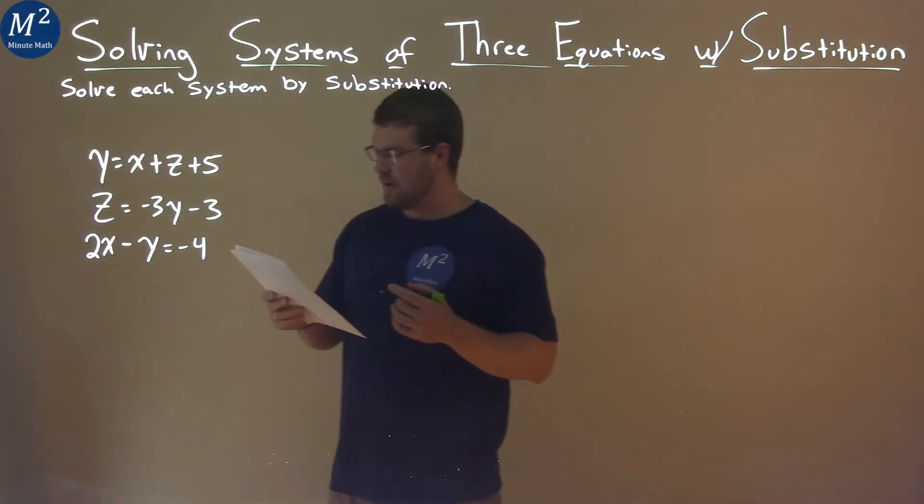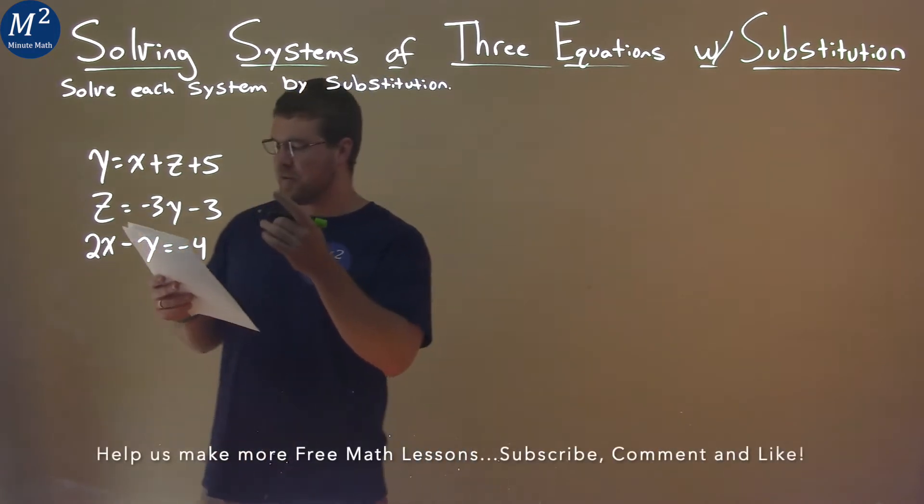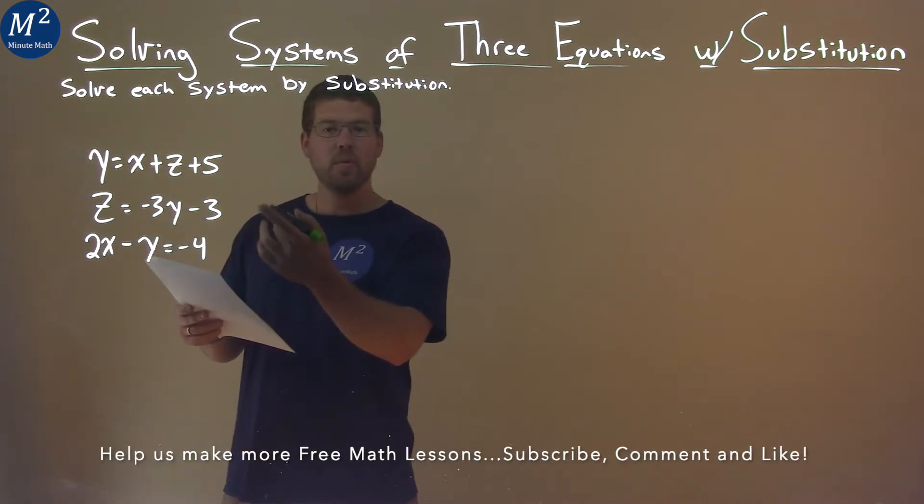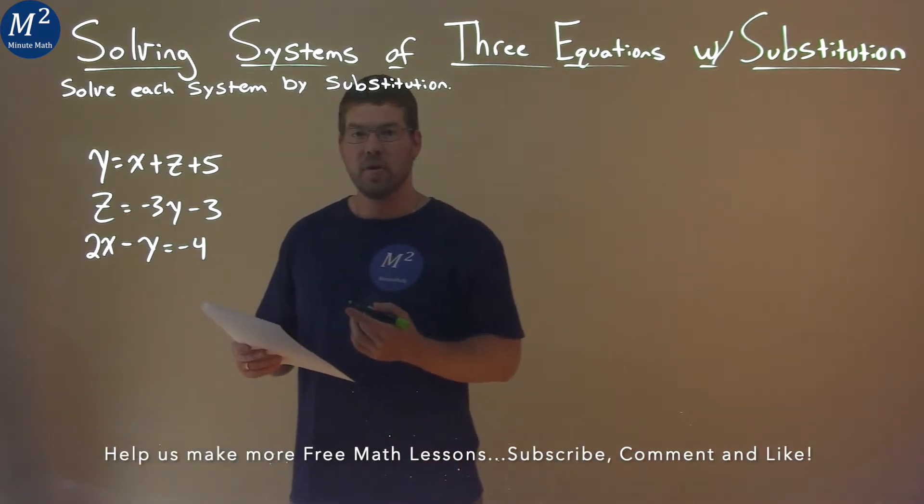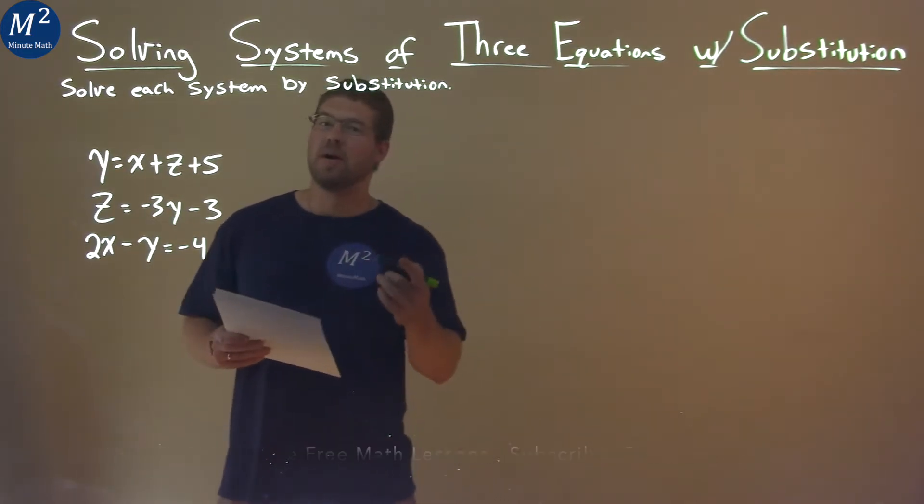We're given this problem right here: y equals x plus z plus 5, z equals negative 3y minus 3, and 2x minus y equals negative 4, and we need to solve this system by substitution.